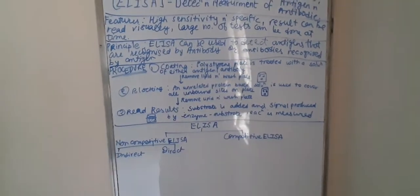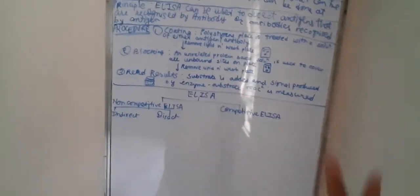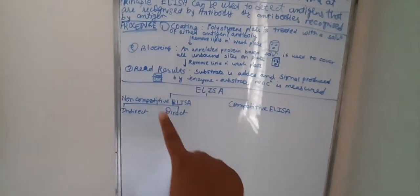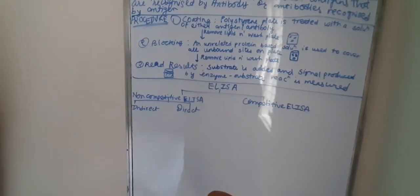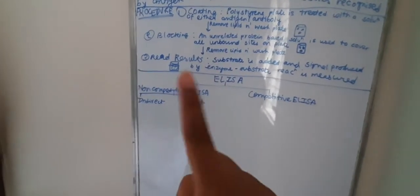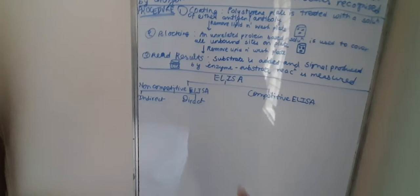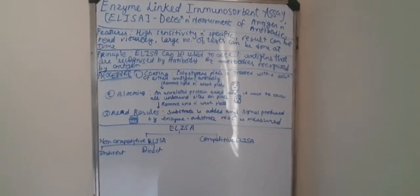ELISA is classified into two types: non-competitive ELISA and competitive ELISA. Non-competitive ELISA has two subtypes - direct and indirect - which we will learn in the next video. Thank you.